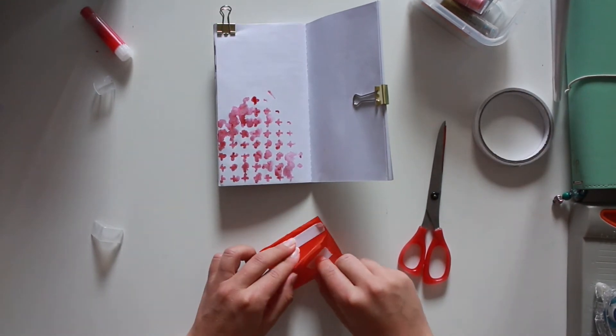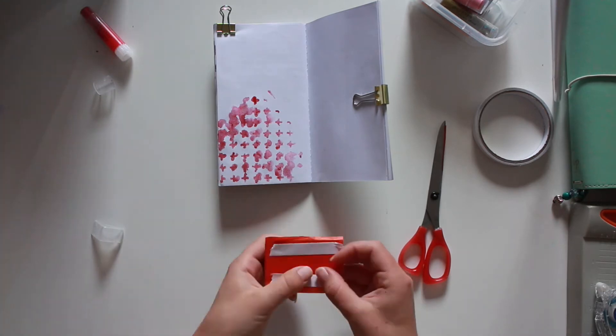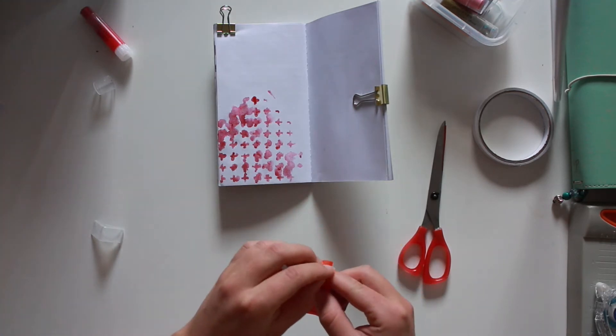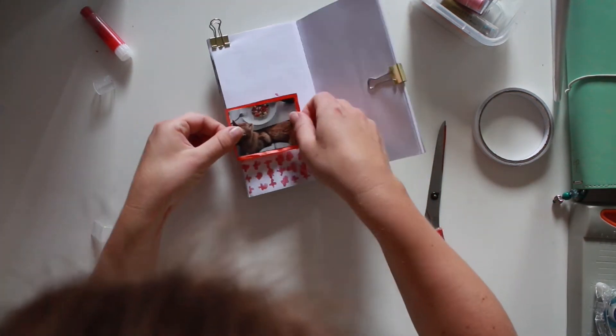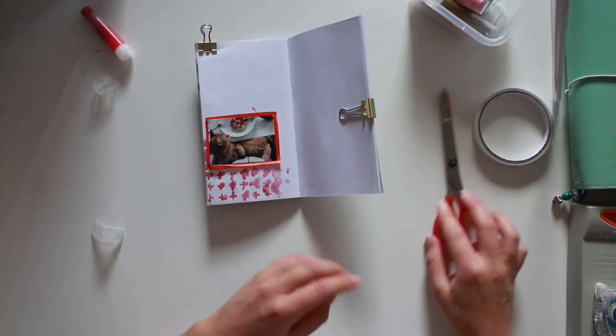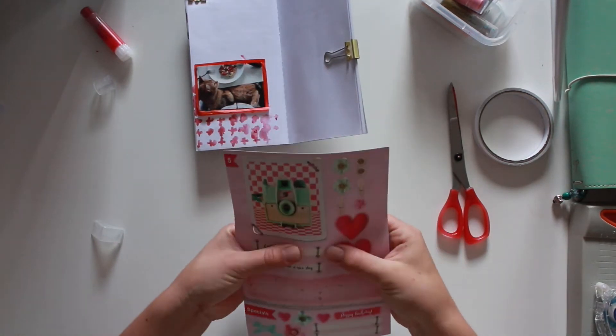Tissue paper doesn't like tape runners. So I just use my double sided tape for that.